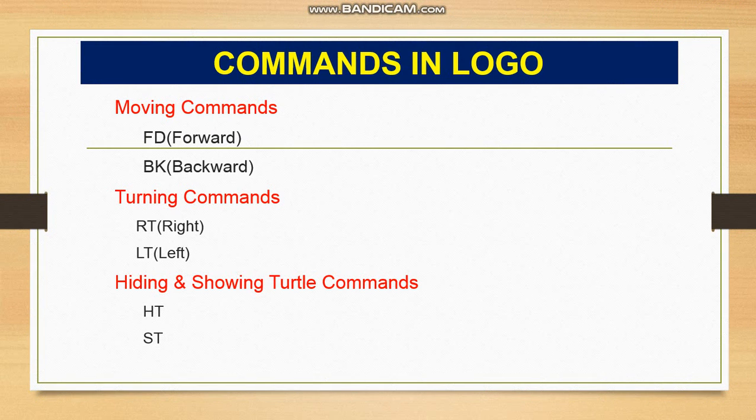The first command in the moving commands category is FD, which means forward. With the help of this command the turtle will move forward. The second moving command is BK, which means backward — the turtle will move in the backward direction.